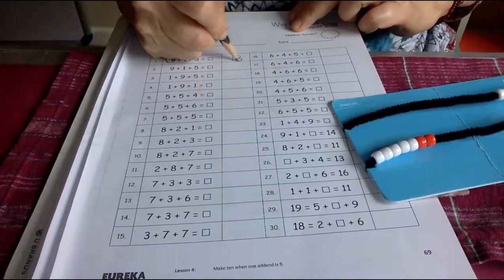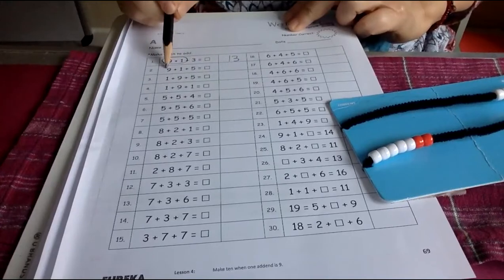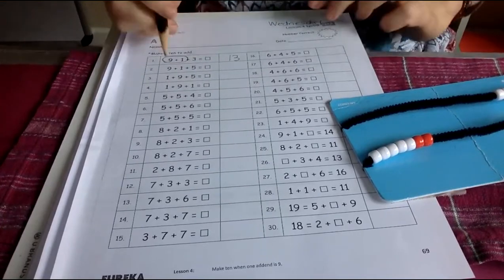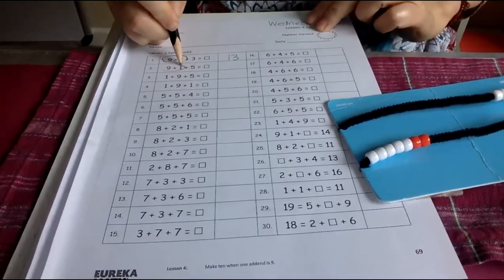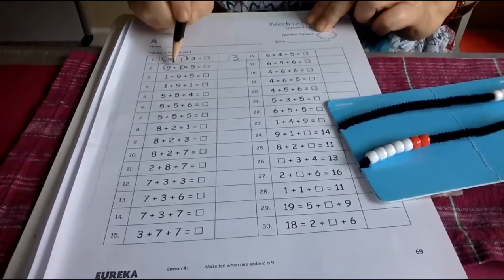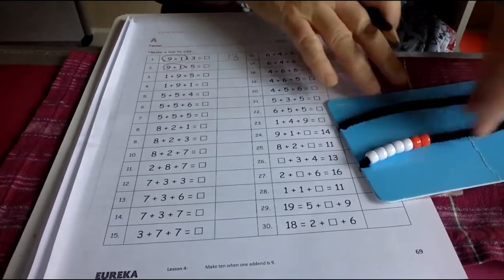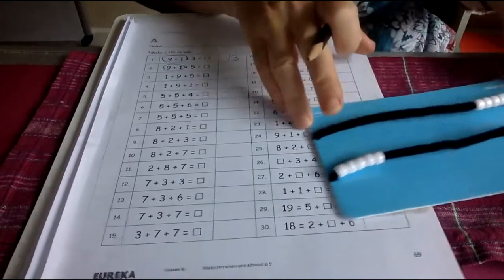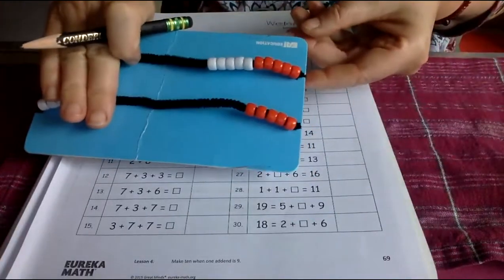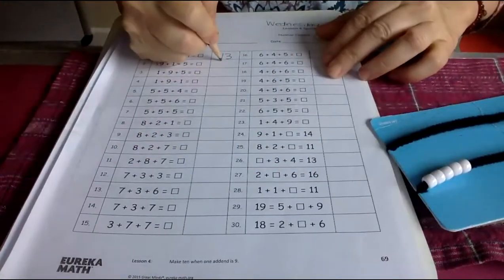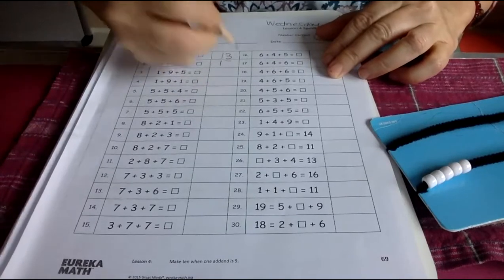If you can find the partners that make 10, oh, there it's going to be a lot of nine and ones. Nine and one, 10, 10 and five, 15.